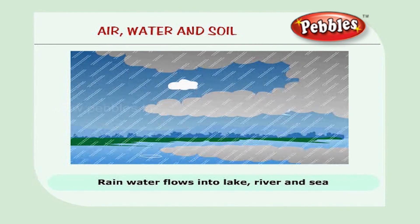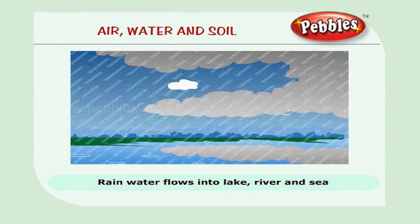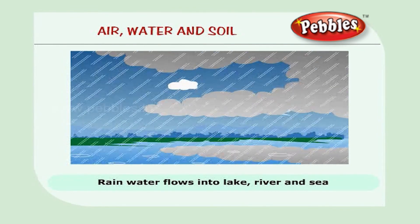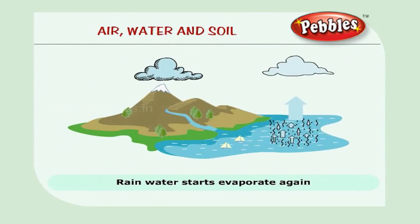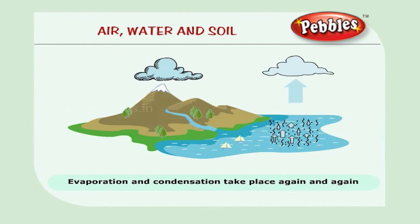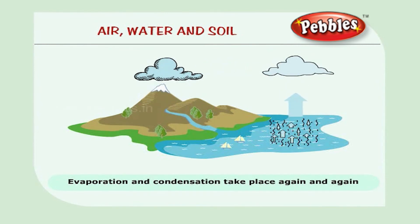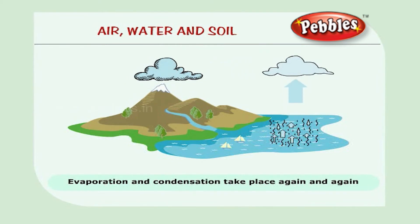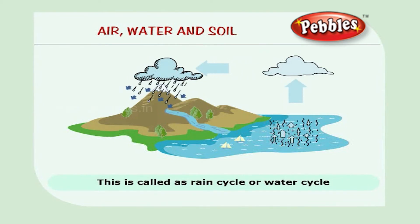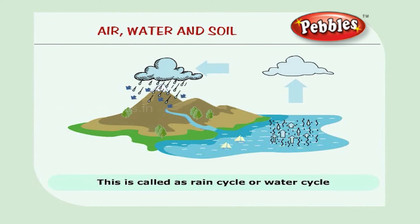The rain water flows back into the lakes, rivers and sea. There it starts to evaporate again. In this way, evaporation and condensation take place one after another, again and again. Scientists call this the rain cycle or the water cycle.